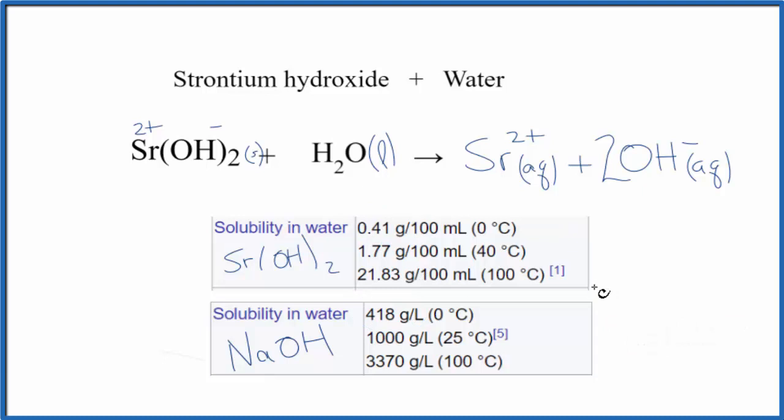They're both considered strong bases. The reason we still consider strontium hydroxide to be a strong base, and that we end up with these ions here, is because although not a lot of it dissolves in water, what does?